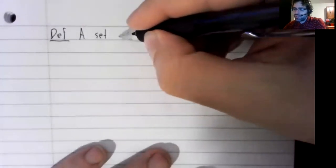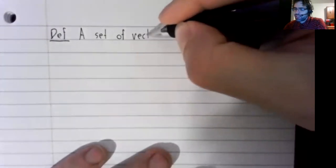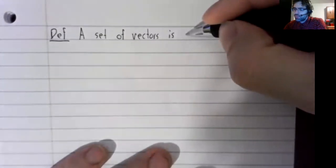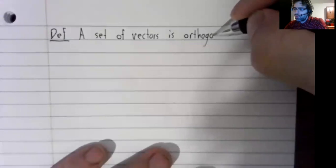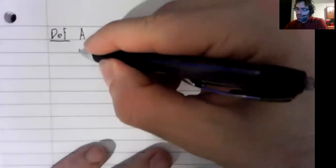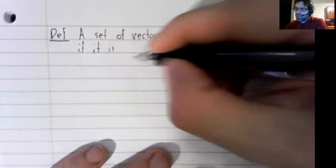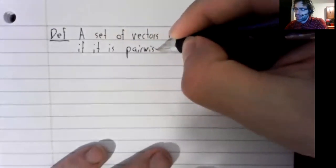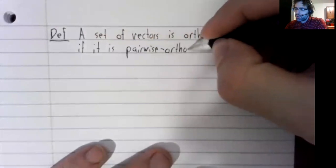A set of vectors is orthogonal if it is pairwise orthogonal.